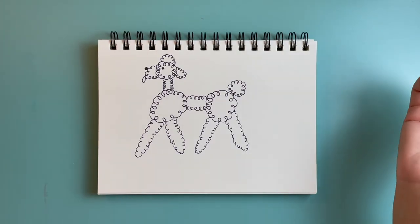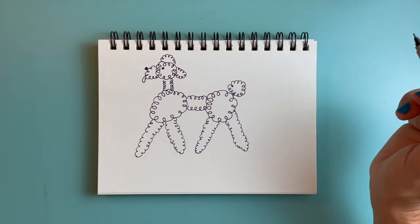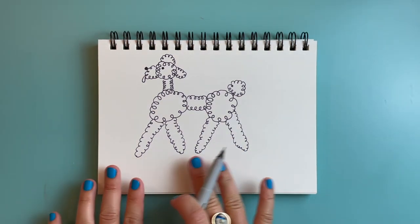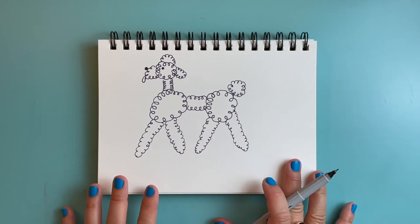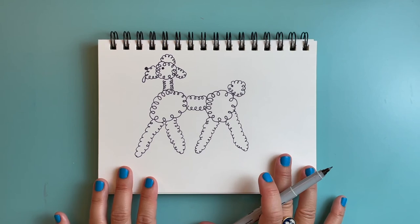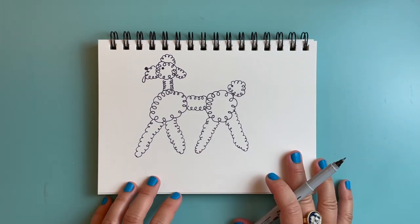Now you can add all kinds of fun details. You could add a collar, you could add a leash, you could add a bow. You could add the street or the sidewalk or some grass wherever our poodle is walking. You can use colored pencils, markers, or crayons to add color, wherever your imagination takes you.